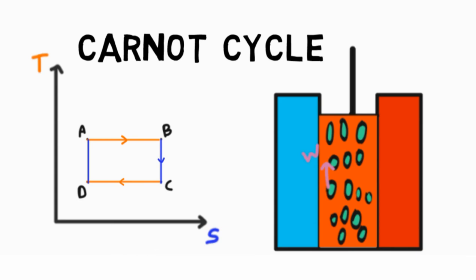The third process is a constant temperature process in which heat leaves the system and the internal energy further decreases.